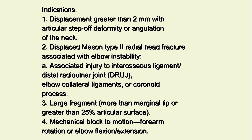Indications: 1. Displacement greater than 2 millimeters with articular step-off deformity or angulation of the neck. 2. Displaced Mason type 2 radial head fracture associated with elbow instability, including associated injury to the interosseous ligament/distal radial ulnar joint (DRUJ), elbow collateral ligaments, or coronoid process. 3. Large fragment — more than marginal lip or greater than 25% articular surface. 4. Mechanical block to motion, forearm rotation, or elbow flexion/extension.